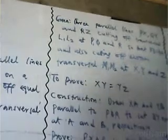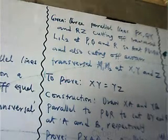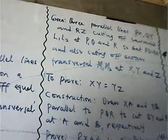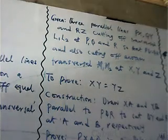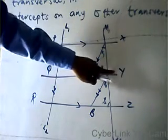These are the three parallel lines we are given. Going with what we are given: we have transversals L1 and L2 cutting the parallel lines P-X, Q-Y at points such that PQ equals QR on the first transversal. Also cutting another transversal at M1 and M2 through X, Y, Z. We want to prove that XY equals YZ.